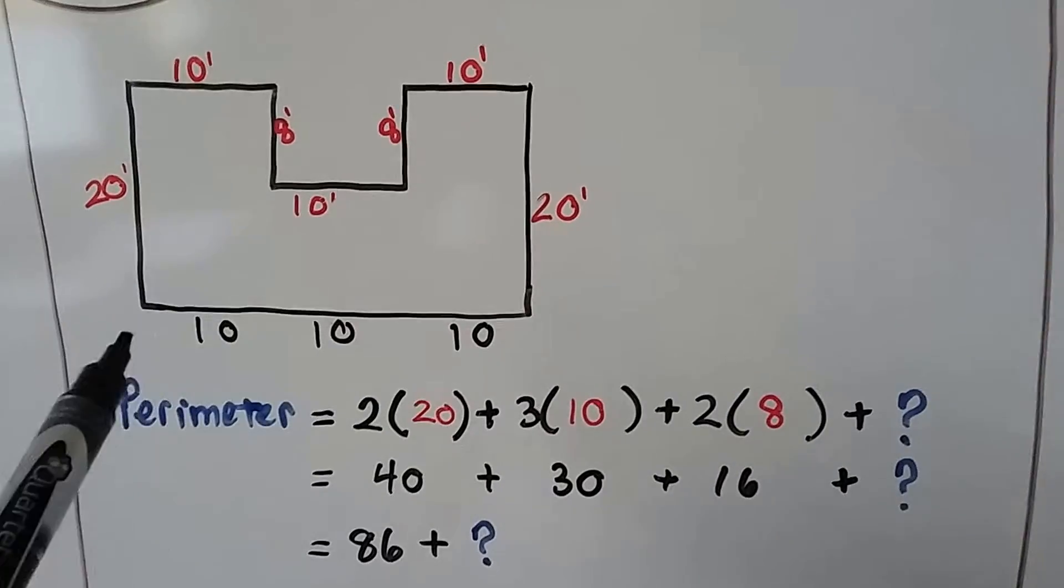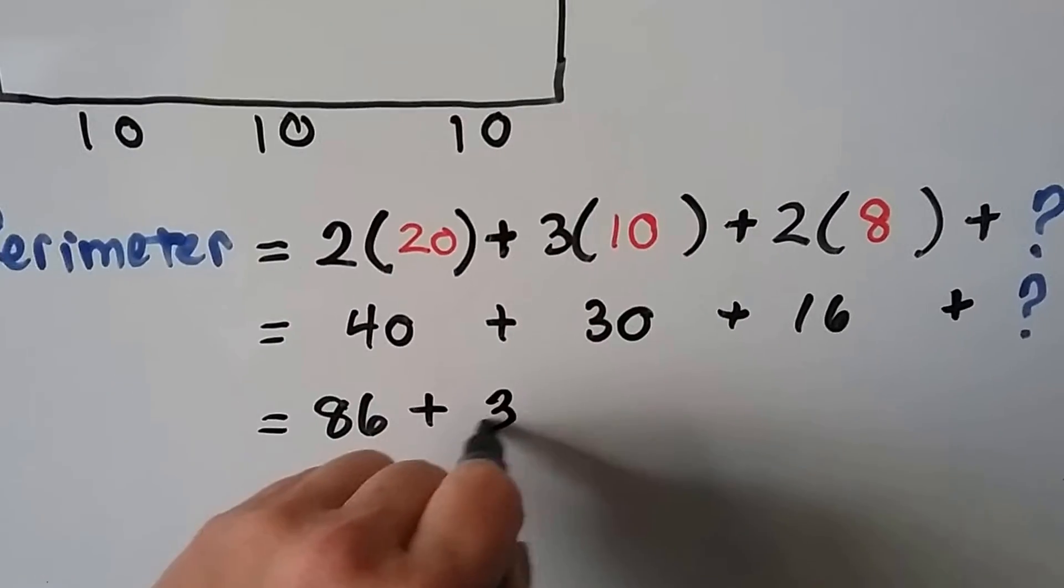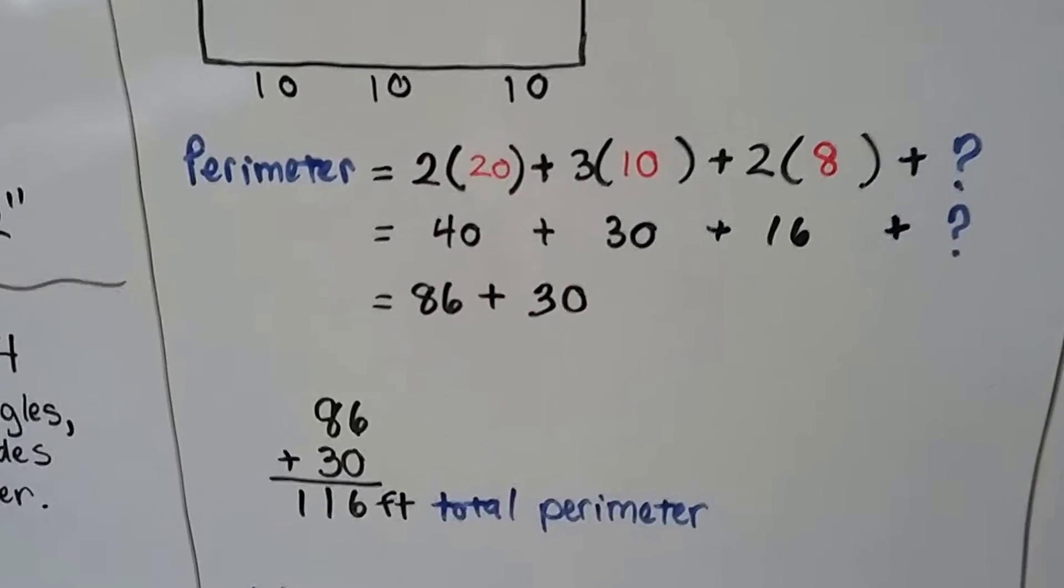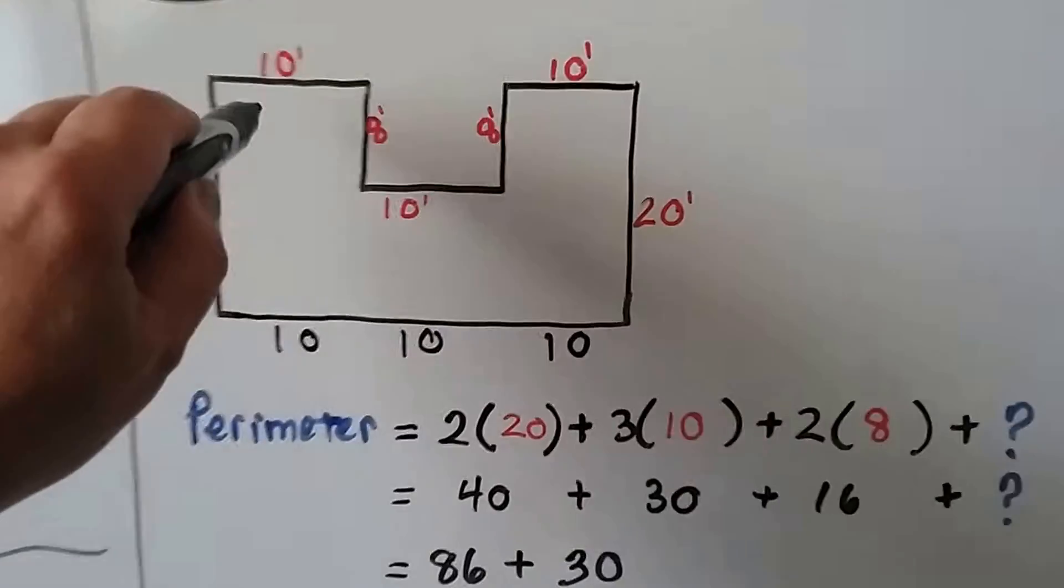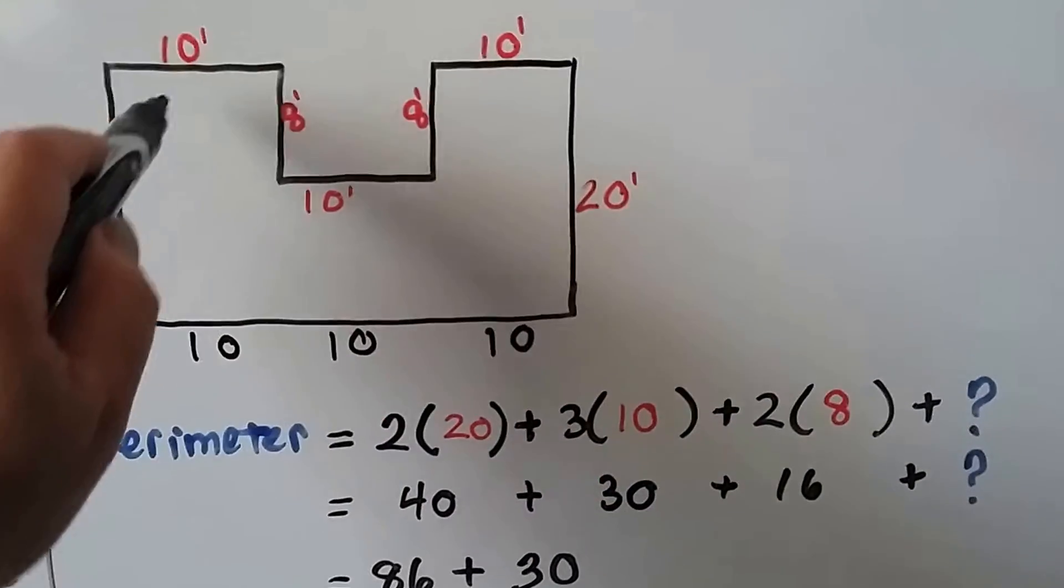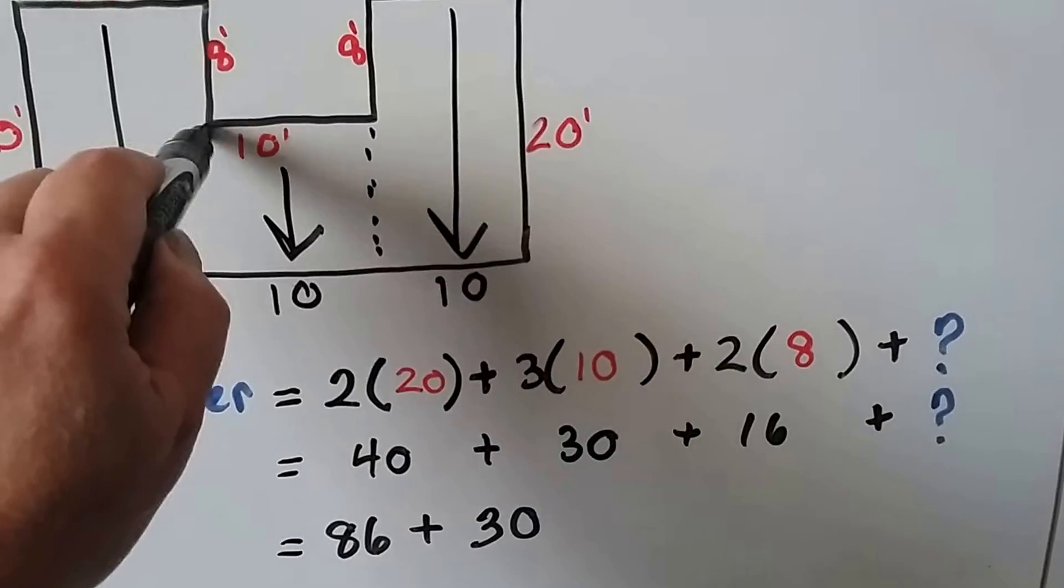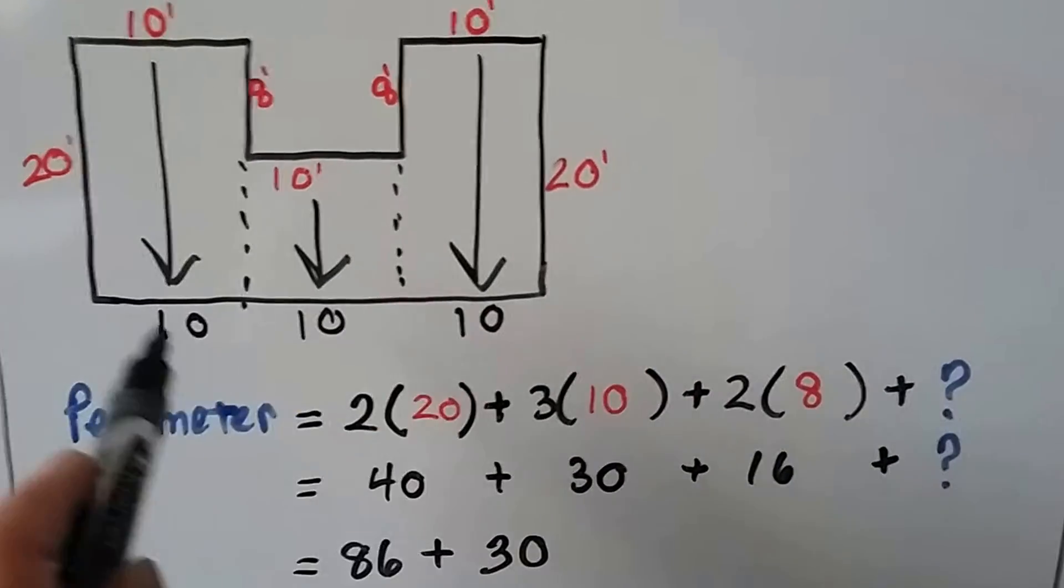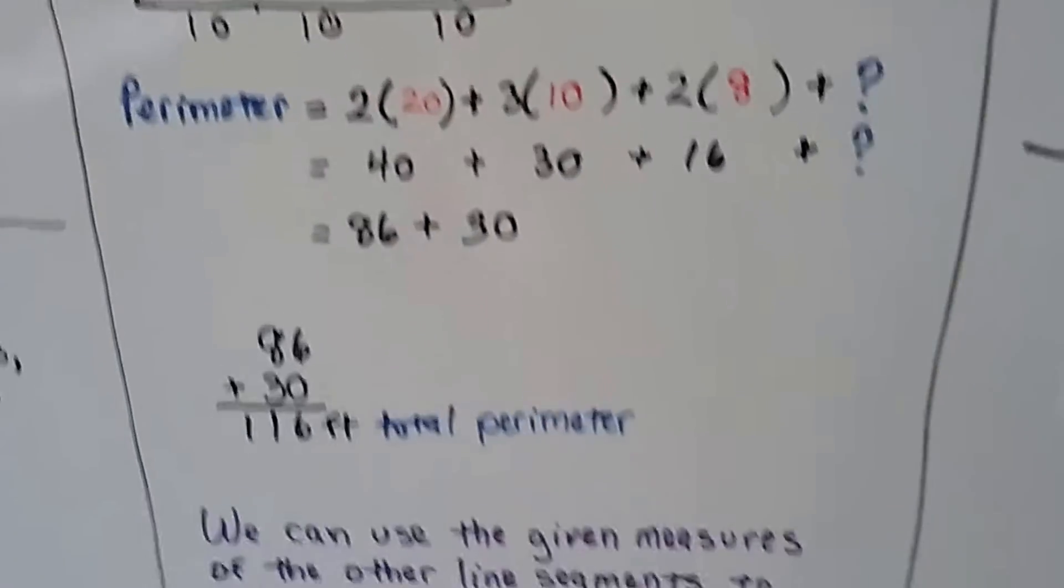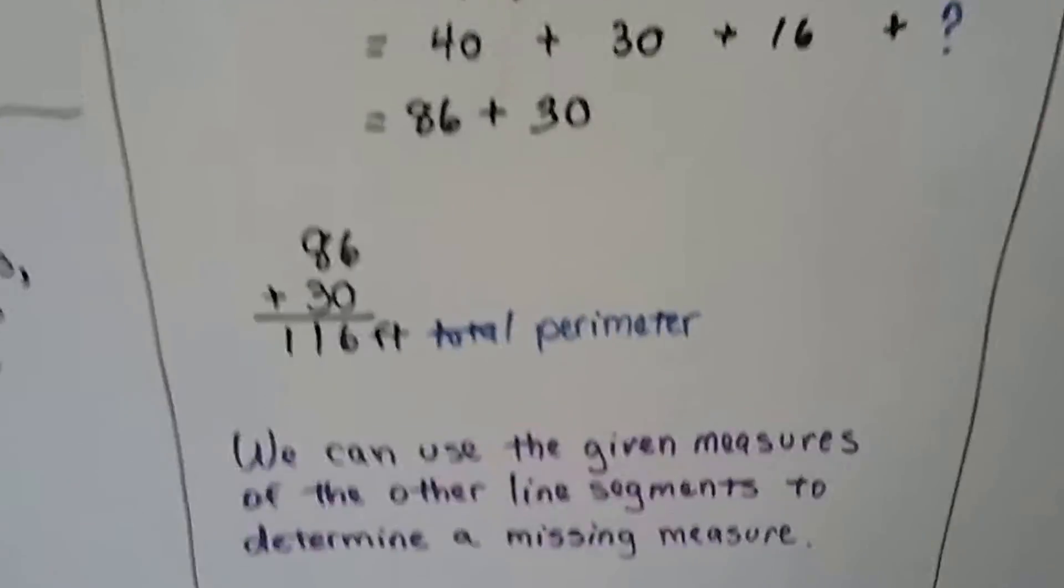We can do 2 times 20 feet, plus 3 times 10 for the top, 1, 2, 3, plus 2 times 8, plus another 3 times 10, a 30. So we can add 30 to this. When we add them up, we get 86 plus that 30, we get 116 feet for the total perimeter. So do you see how I just brought these down? Because this side has square corners, almost as if it's a rectangle, so I just brought that down. And we can use the given measures of the other segments to determine a missing measure.